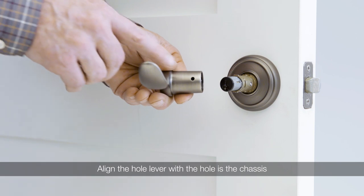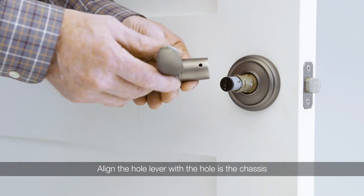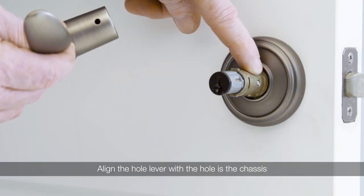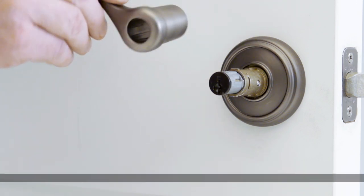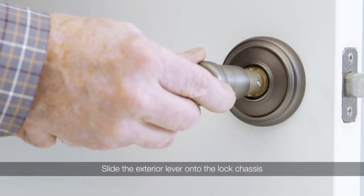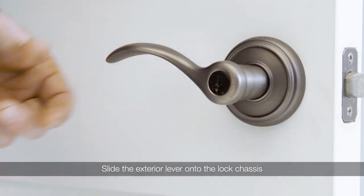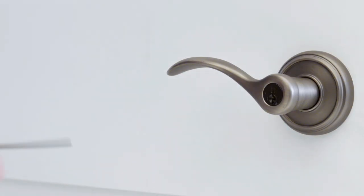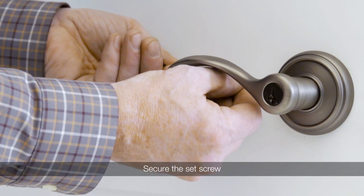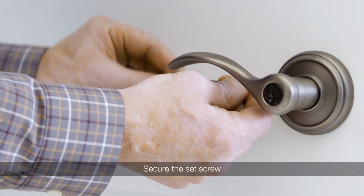Align the hole in the lever with the hole in the chassis where you do not see anything, opposite of where you see the pre-installed set screw. Slide the exterior lever onto the lock chassis. Insert the Allen wrench through the hole into the lock chassis and turn the set screw clockwise.